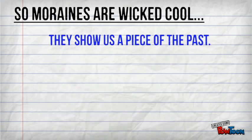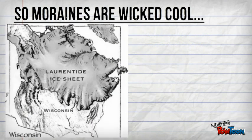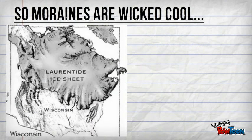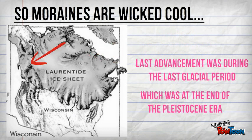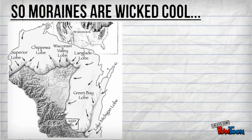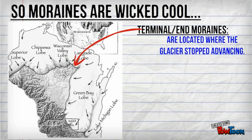Moraines show us the location and general idea of what the glacier looked like years ago. From the last glaciation period, we have the Laurentide Ice Sheet. We can see that Wisconsin was almost covered. Where the glacier stopped advancing is where we see moraine-like structures. Terminal or end moraines are usually seen where the lobes ended.